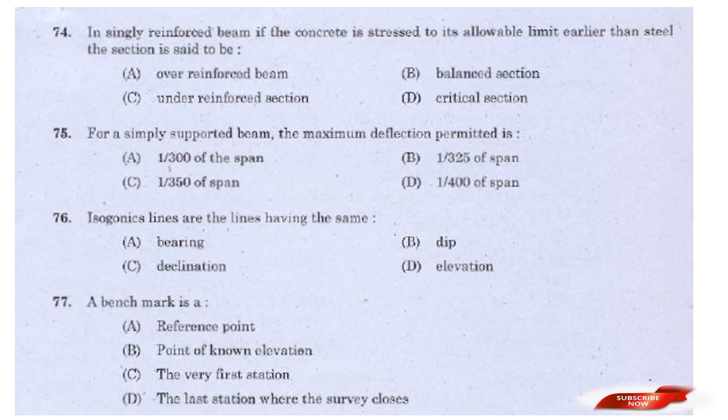Question: In a singly reinforced beam, if the concrete reaches its allowable limit earlier than steel, the section is said to be — options: Over-reinforced beam, Balanced section, Under-reinforced section, Critical section. Answer: Option A — Over-reinforced beam.